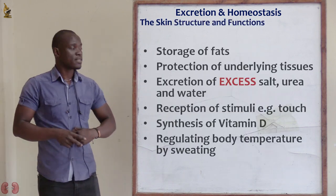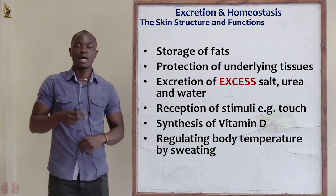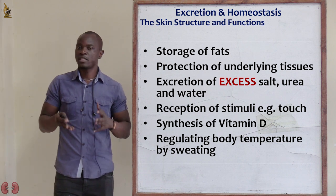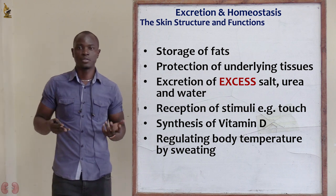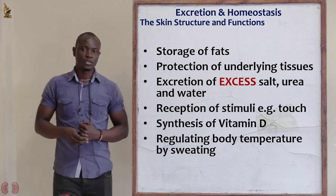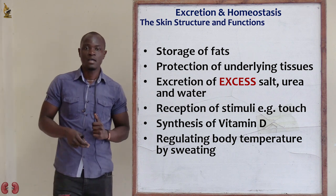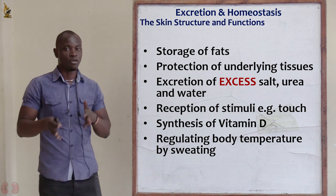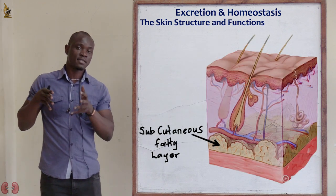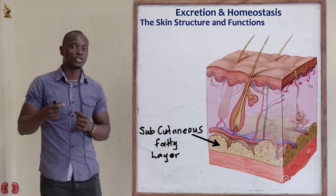Let's look at the structure and function of the mammalian skin. The first function of the skin is storage of fats. Excess fat is stored in the subcutaneous fat layer.